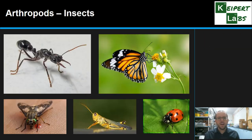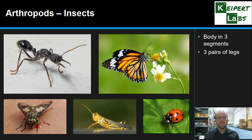One of the subgroups is insects. Insects have a body in three segments — the head, the thorax, and the abdomen — and they also have three pairs of legs. So we're looking at things like ants, butterflies, flies, grasshoppers, ladybirds, and beetles. They're all examples of insects — a very wide and diverse group.